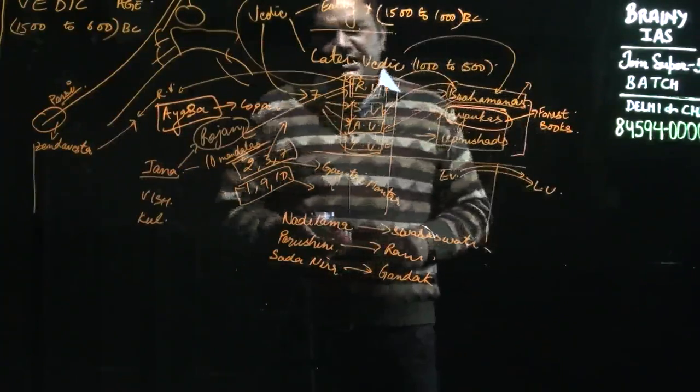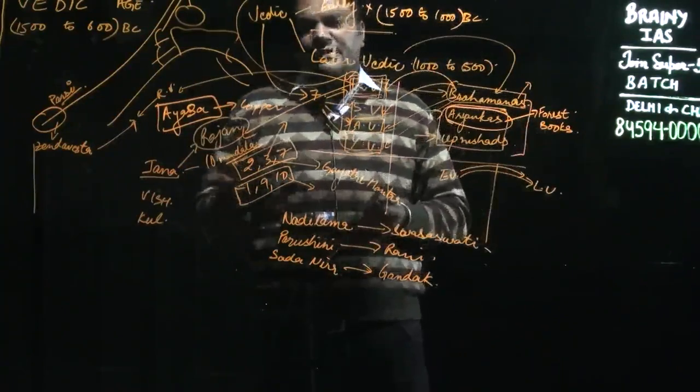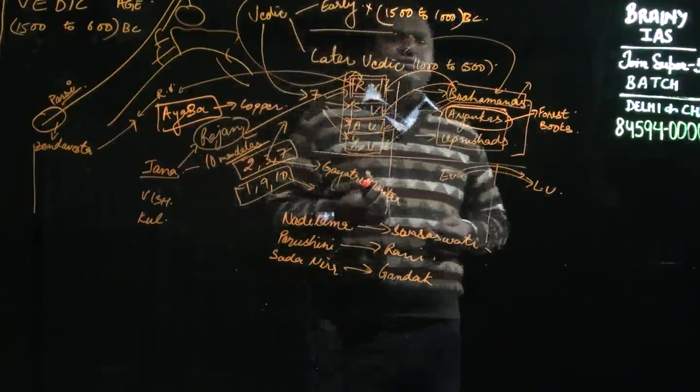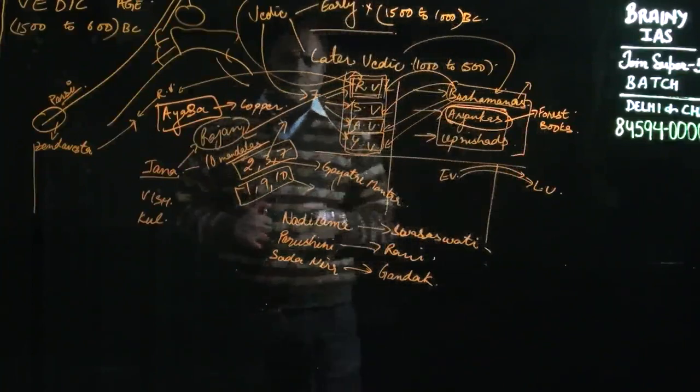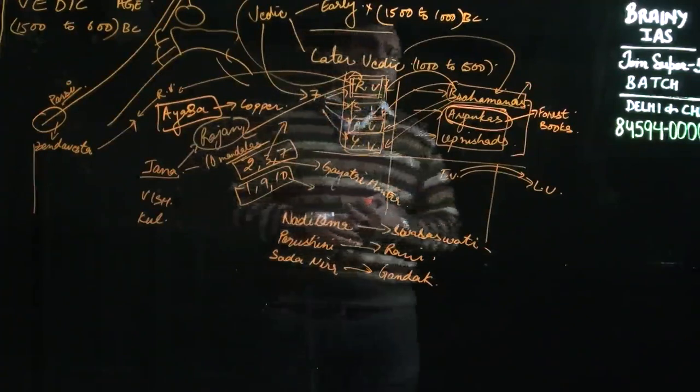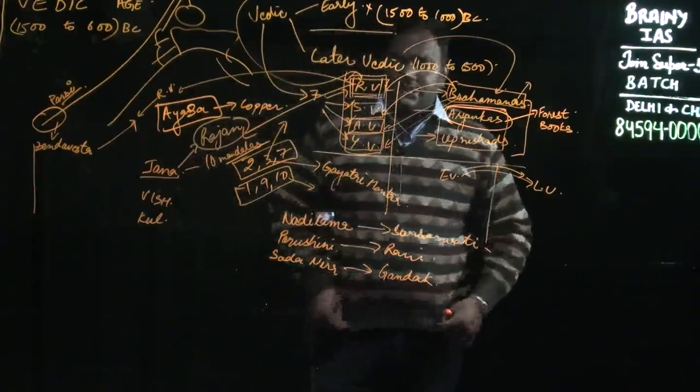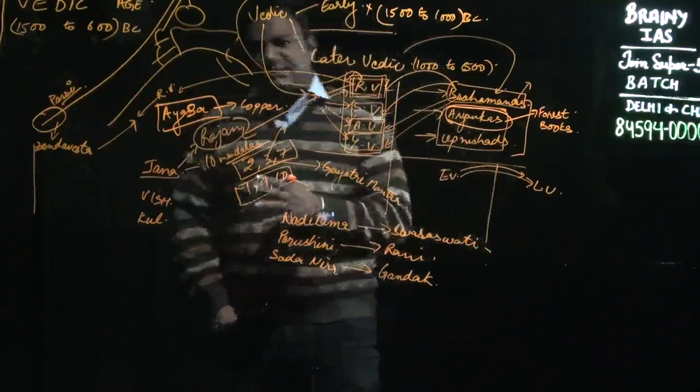The Raja was head of the society in Early Vedic phase and also head of religious functions. This society was tribal in nature, so the head or Rajan would be elected on the basis of efficiency. Whosoever was the strongest man in the tribe would be king of the tribe. Hence there was no birth-based system.